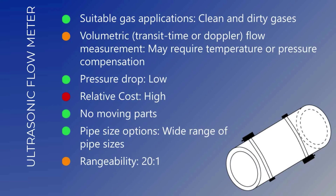Ultrasonic flow meters emit ultrasound pulses in the flow path using either transit time or Doppler effect to calculate the volumetric flow rate. They are suitable for clean or dirty gas applications, provide volumetric flow measurement, and may require temperature or pressure compensation to calculate mass flow. Ultrasonic flow meters have a low pressure drop, are high cost, have no moving parts and low maintenance, are available in a wide range of pipe sizes, and have a rangeability of 20 to 1.